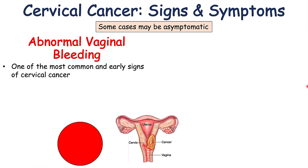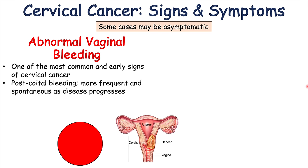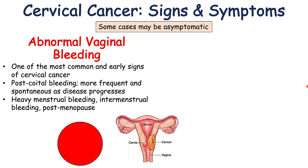Abnormal vaginal bleeding is one of the most common and early signs of cervical cancer. It often starts with post-coital bleeding — meaning bleeding after intercourse — which is frequently the first time patients notice it. Over time, the bleeding becomes more frequent and spontaneous as the disease progresses, showing up as heavy menstrual bleeding, intermenstrual spotting or bleeding between periods, or post-menopausal bleeding. This occurs because the growing cancer can erode and ulcerate the cervix, causing bleeding.